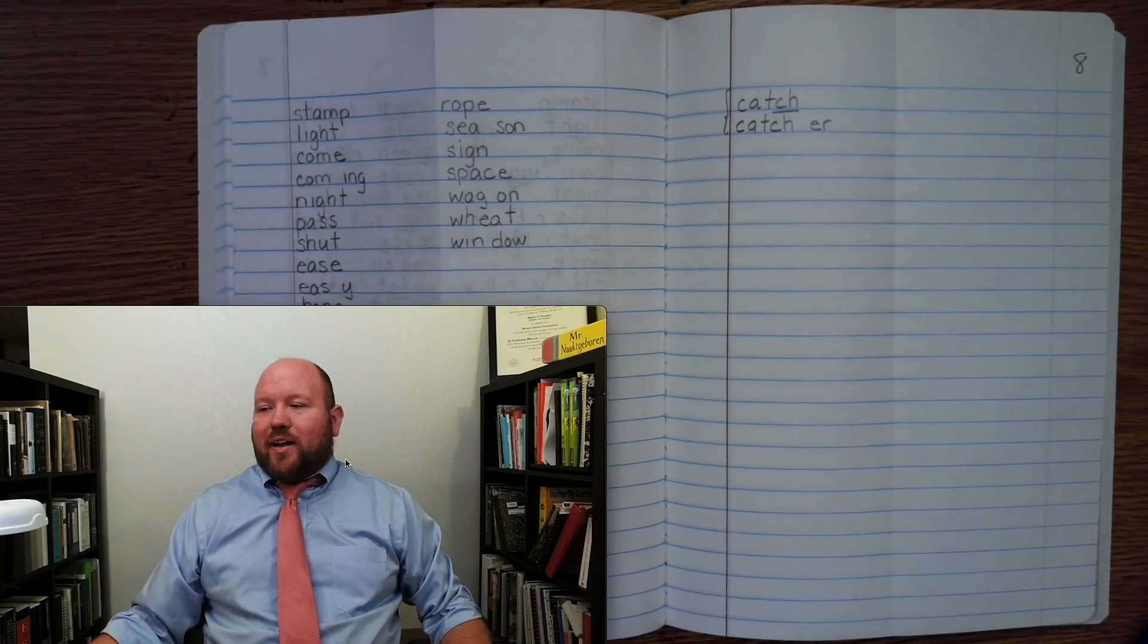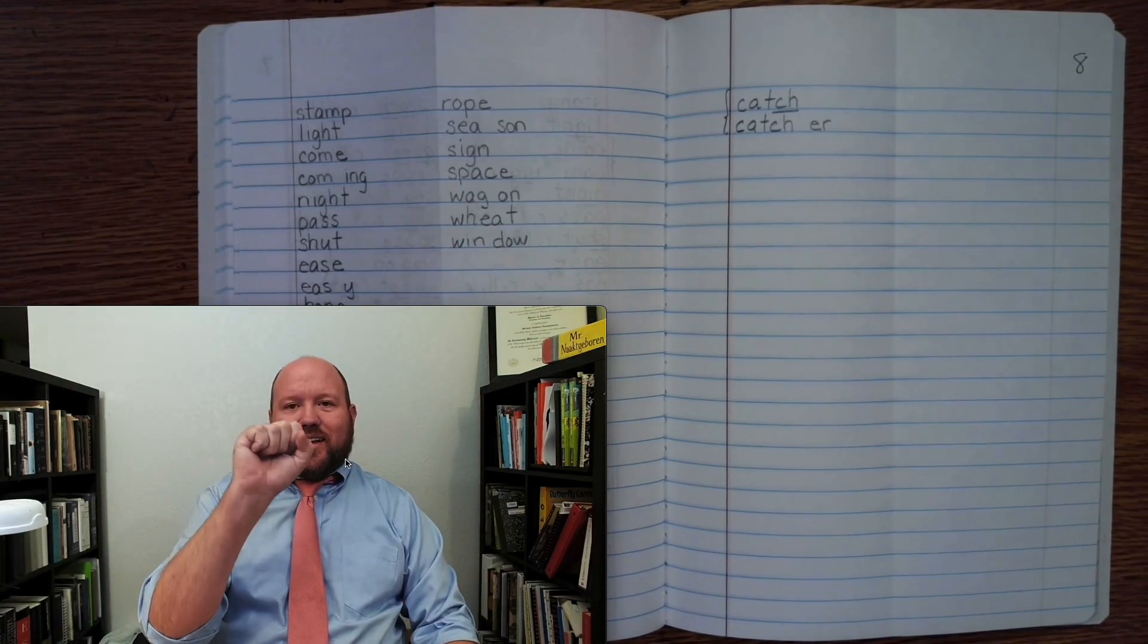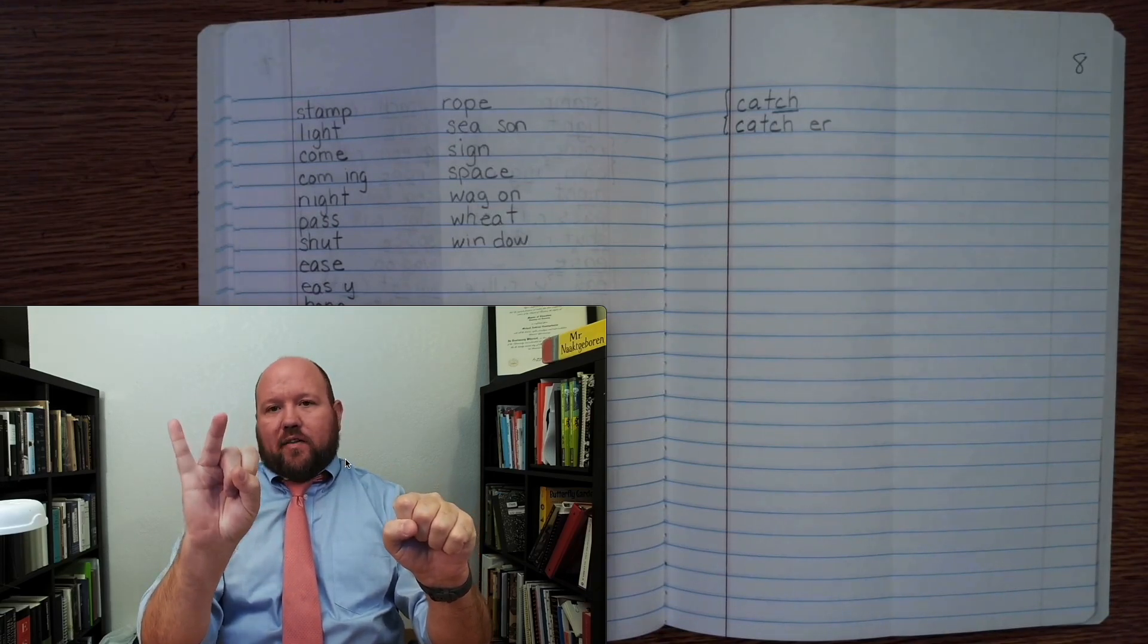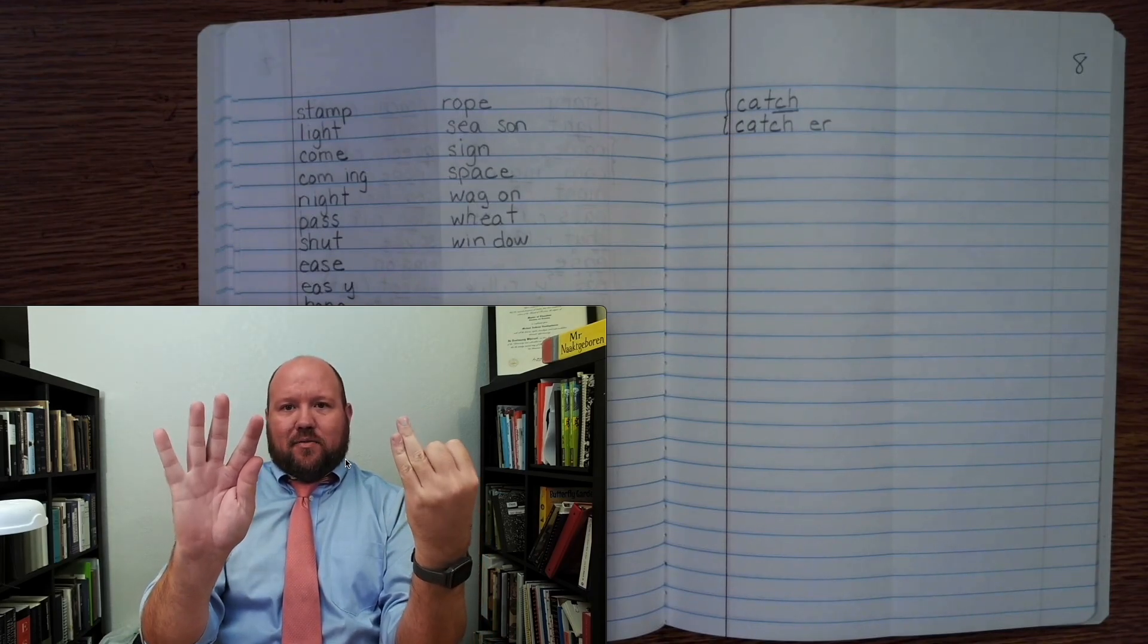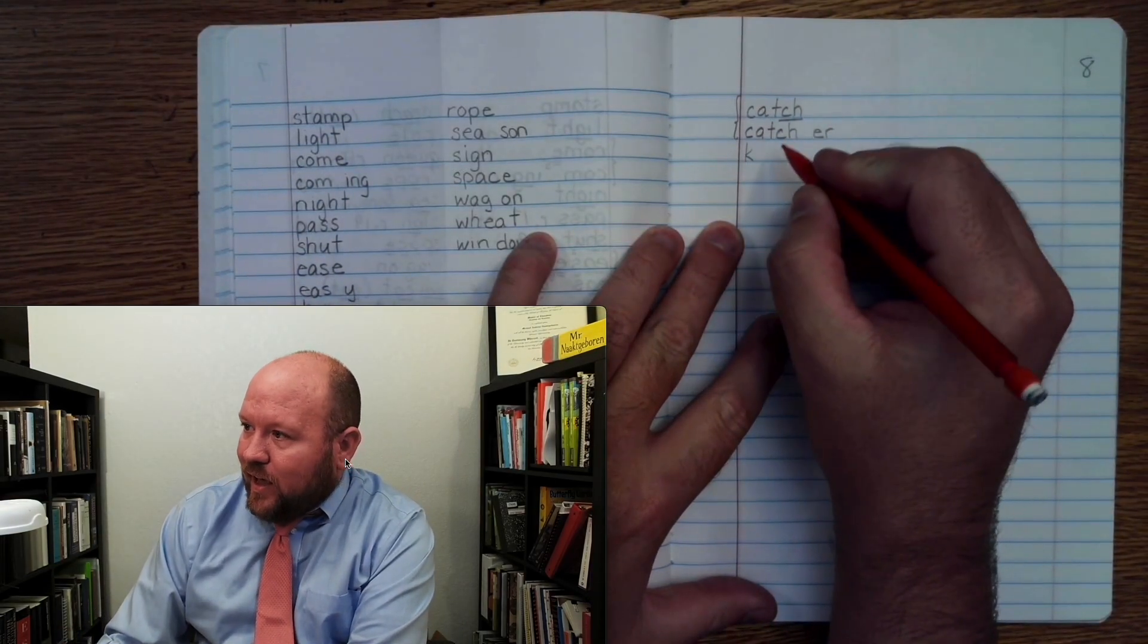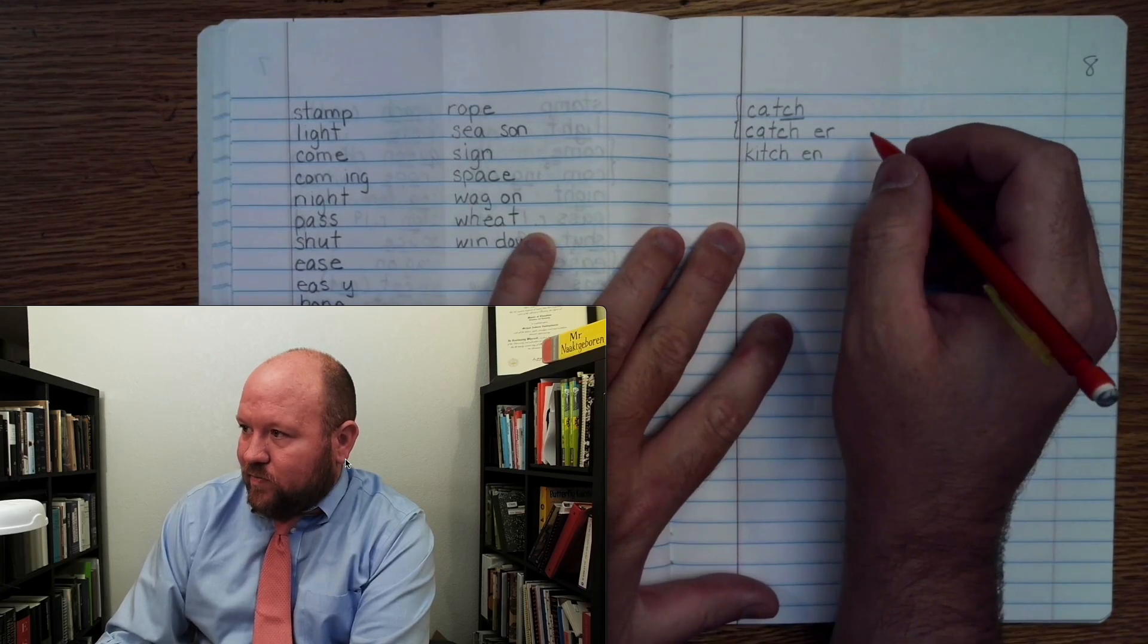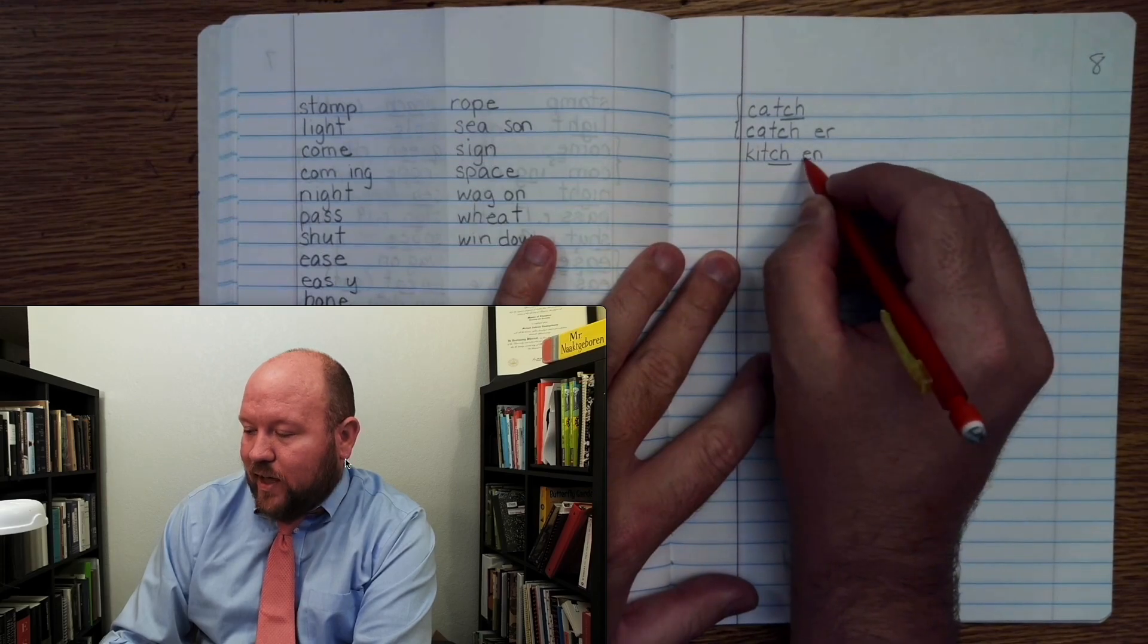Now the next word is the word kitchen. I went to the kitchen. Kitchen, base word kitchen. Kitch-n, K-I, and what do we hear? We got a ch right? So we're going to have a silent T. Kitchen. K-I-T-ch-E-N kitchen. And markings K-e-tch once, E-N.